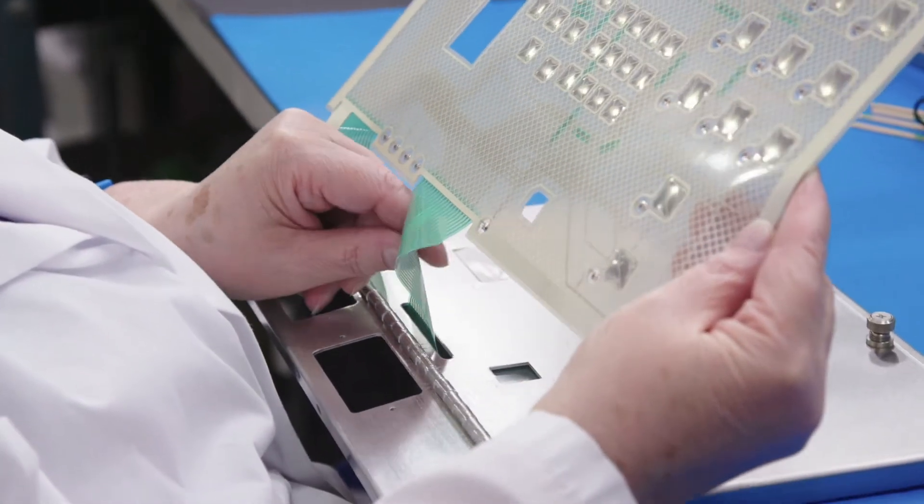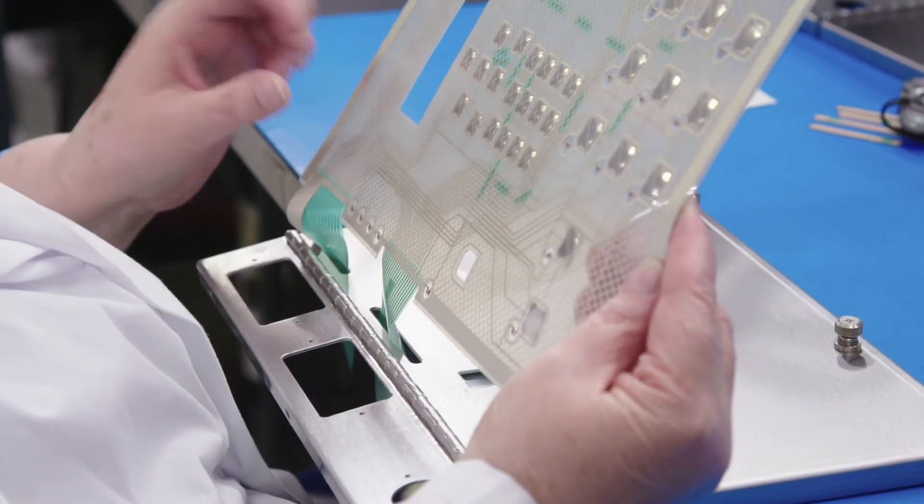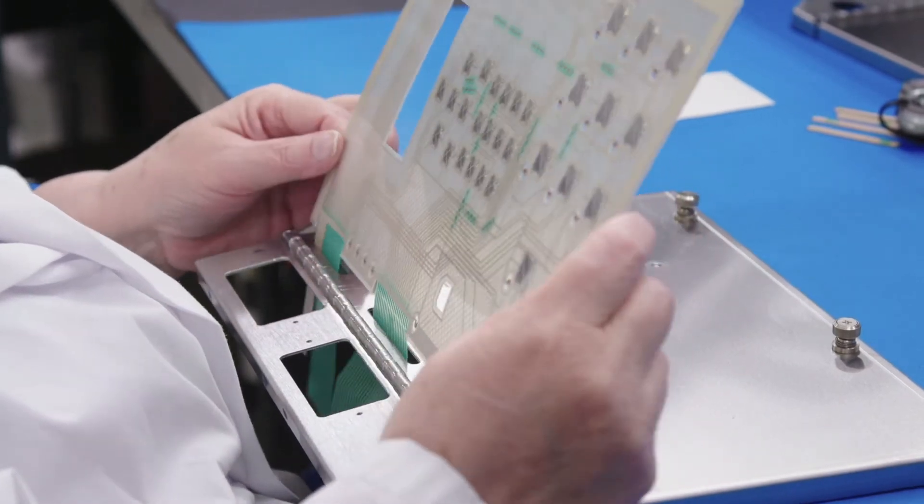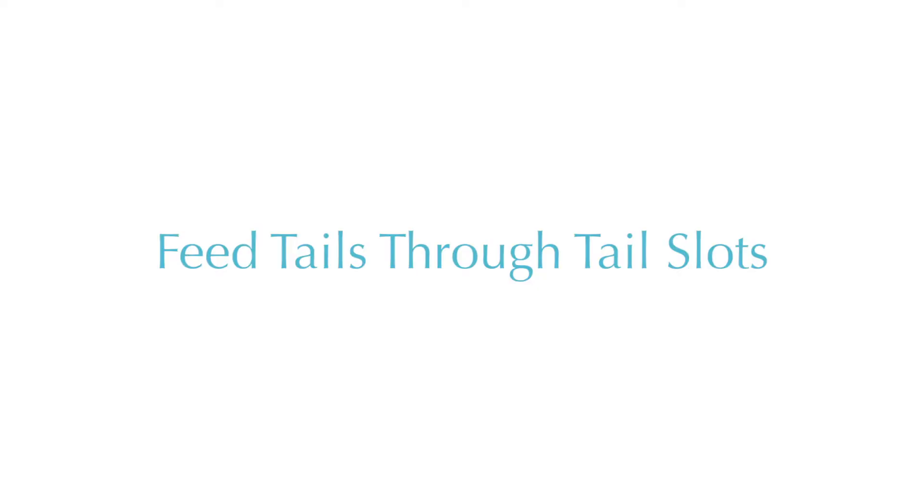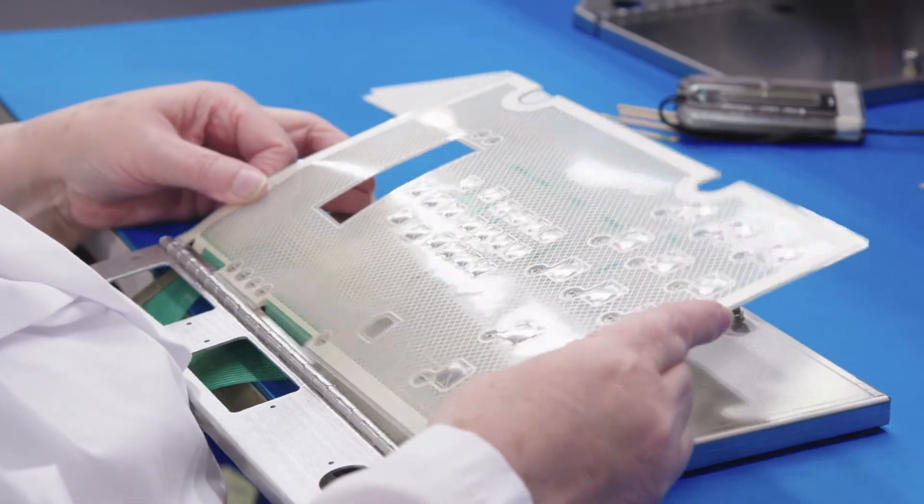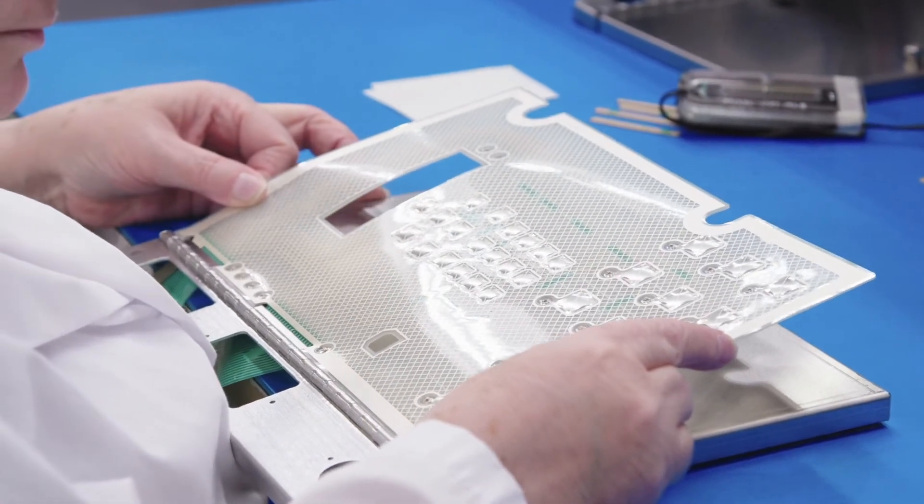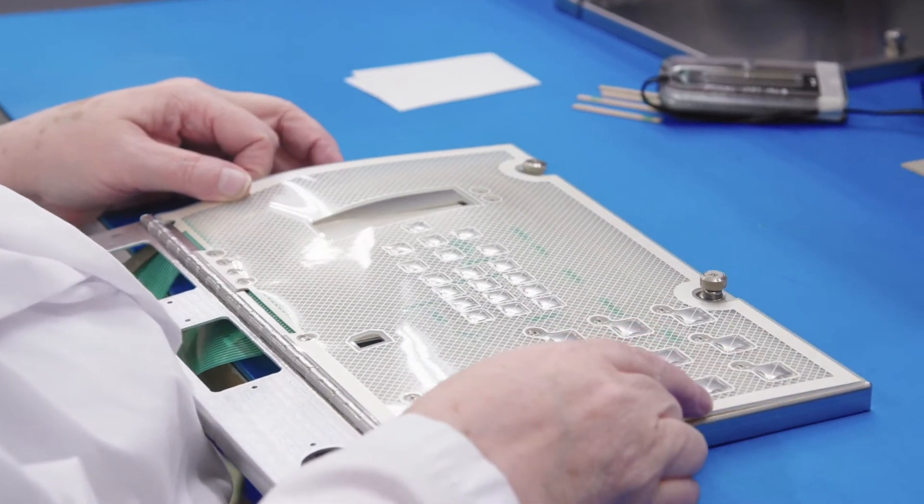One of the difficult parts of this assembly is the fact that there are three tails. One for the LED circuit, one for the switch circuit, and one for the shielding layer that have to be fed through the tail slots in this aluminum door. That's why we've designed the fixture, so that you can slide it back and forth on the table, even though it is securely supporting the door itself.